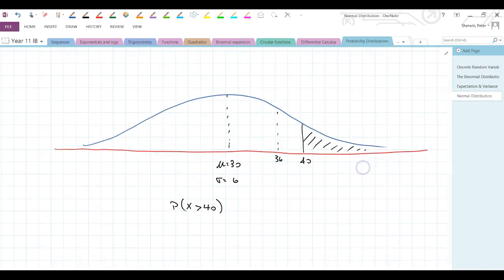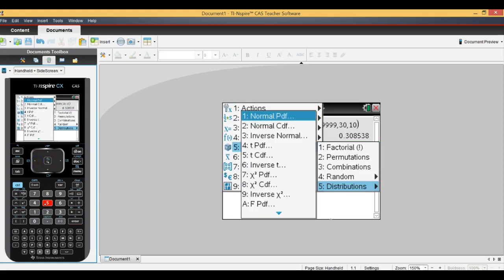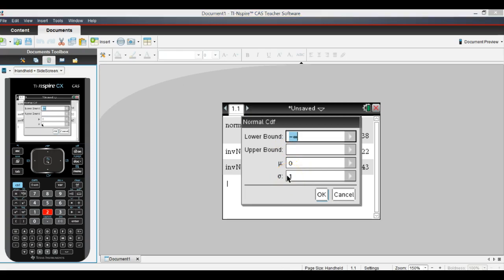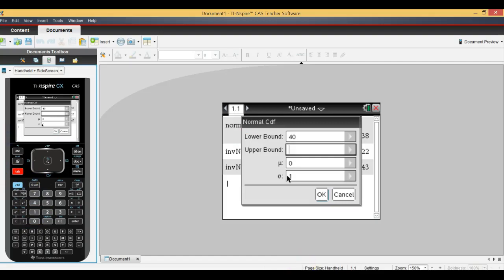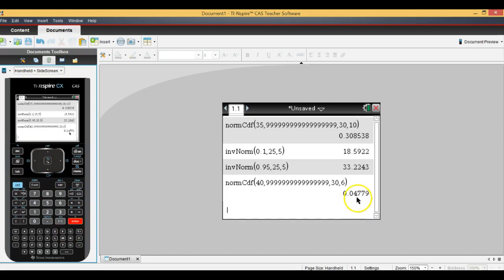We can calculate this. We go back to our old friend menu 5, 5. We're in distributions. Now we're in normal PDF, normal CDF. We're going to get normal CDF. And we see there we've got a lower bound, an upper bound window, a mean and a standard deviation window. Now what's our lower bound here? I want to know what the probability of being above 40 is. So 40 is my lower bound. Now my upper bound's interesting because I don't have one. It's infinity. So I'm just going to pump in a big old number here. Now my mean is 30, and my standard deviation is 6. And I'm going to hit OK. Now it's going to give me 0.04779.